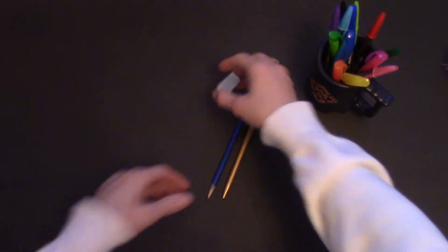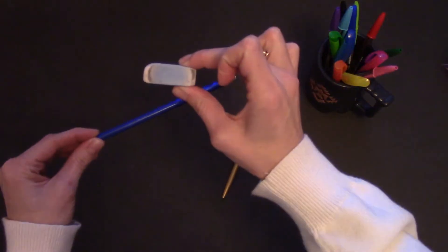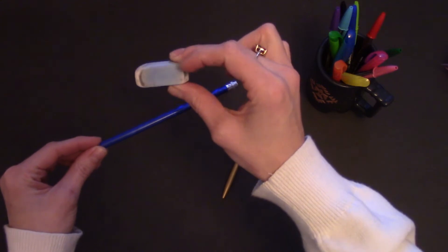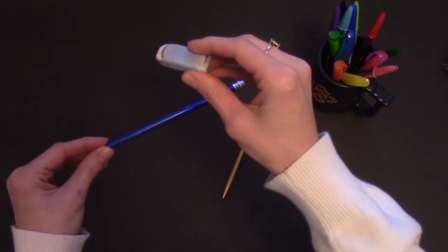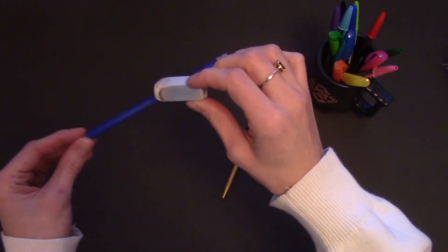When using my bullet journal, I always pencil everything in first and then I use this Pentel polymer. It's like a rubber eraser. It's super handy. It's my favorite kind of eraser and I've used them for years.